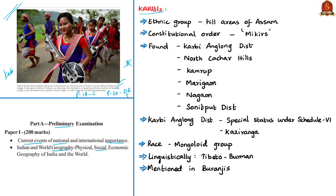Kharbis constitute an important ethnic group in the hill areas of Assam and are mentioned as Mikirs in the Constitutional Order of the Government of India. However, they call themselves Kharbi or sometimes Arling, meaning 'a man.' They primarily inhabit Karbi Anglong district of Assam, with pockets also in North Cachar Hills, Kamrup, Morigaon, Nagaon, and Sonitpur districts. Karbi Anglong district enjoys autonomy under the Sixth Schedule of the Indian Constitution and is the largest district of Assam by area.